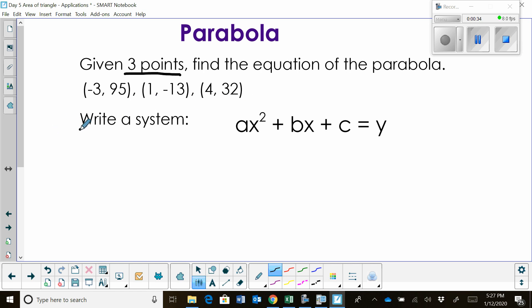The first thing we're going to do is write a system of equations using our standard form. To do that, we're going to take each ordered pair, an x and a y, and plug it in. So I'm going to take this first one, (-3, 95), and plug it in. We're going to plug in -3 for x, right here and here.